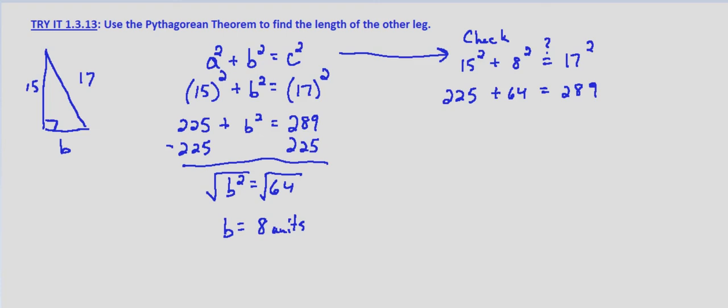And yes, 225 plus 64 does equal 289. So our solution checks. The length of the other leg is 8 units.